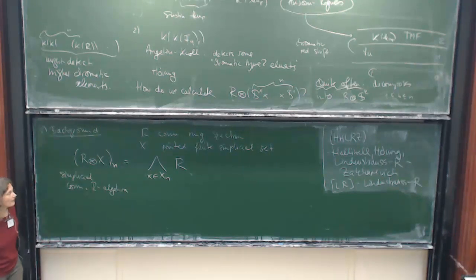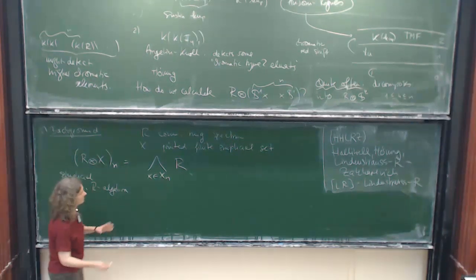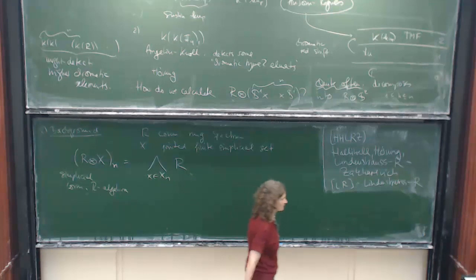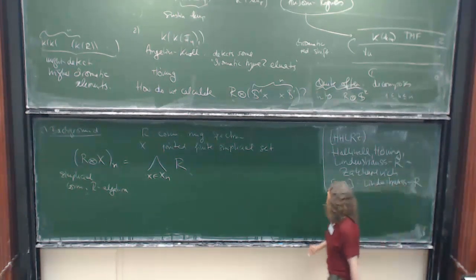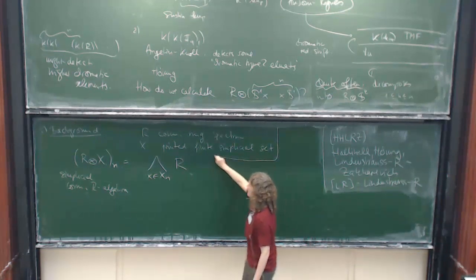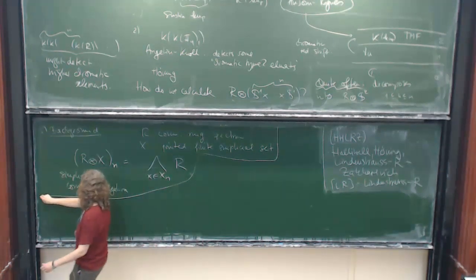I can just write it down for you. So what you take is, in degree n, you just take the smash product of as many copies of R as you have in your space. So then if you want to, you can take geometric realization, and this turns this into a commutative R-algebra augmented over R. You don't have to. This works in this full generality, and let me just focus on the examples that I'll deal with today.